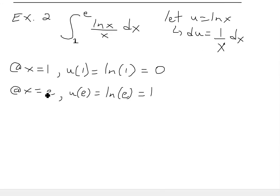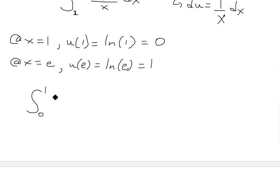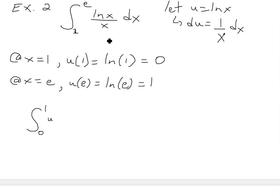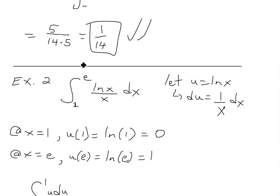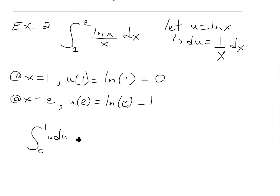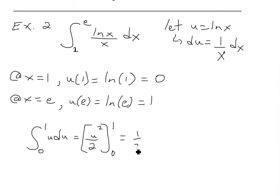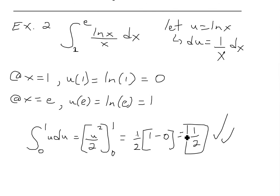Now we're ready to substitute everything. We get the integral from zero to one of u du, since ln x becomes u and one over x dx becomes du. The antiderivative of u is u squared over two. Evaluating from zero to one, we get one half times one squared minus zero squared, which is one half times one minus zero, leaving us with one over two as our final answer.